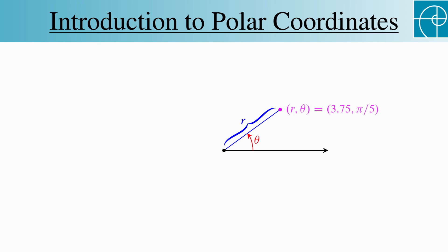So this point is (r, θ), and for what it's worth, it's (3.75, π/5). It's 3.75 units from the origin, and the line segment connecting it to the origin forms an angle of π/5.